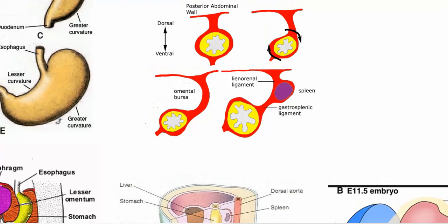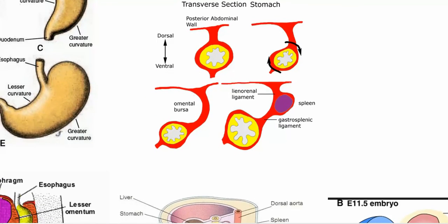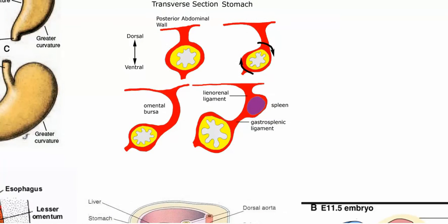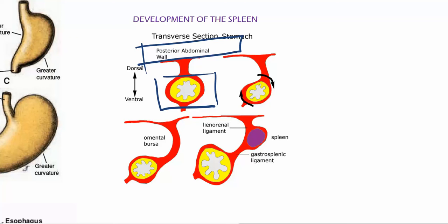If you look at this image, you want to visualize this as the gut tube, and you want to visualize this as the posterior abdominal wall. So this here is your dorsal mesentery. And this, depending on where it's at, could be your ventral mesentery.